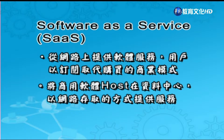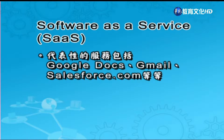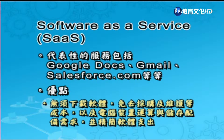SaaS的計費方式有按月訂閱或計次付費兩種形式。一般來說，你可以透過網路瀏覽器隨時隨地存取服務。代表例子很多，像是Google Docs、Gmail，還有我們提到的Salesforce CRM，都是典型代表。它的優點是根本不需要下載軟體，可以免除採購、維護的成本，以及電腦運算與儲存配備的需求，精簡軟體支出。